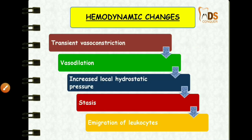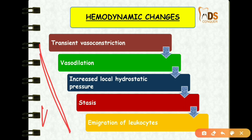The first changes in vascular events are hemodynamic changes, and this sequence is very, very important — they can ask sequence questions. The first step is transient vasoconstriction. So if there is any cell injury, the first thing to happen is transient vasoconstriction of arterioles, meaning the vasoconstriction lasts only for a certain period of time.